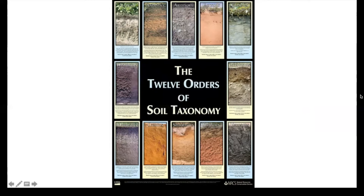The next one is called Histosols. Histosols are dominantly composed of organic matter in the upper portion. This can contain different bogs, peatlands, fens, peats, and mucks. This occurs in extremely wet areas — meaning it's saturated year-round. It's not going to be suitable for any foundations or roadways, and it can be highly acidic as well. This makes up about 1% of the world's glacier-free land surface.